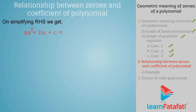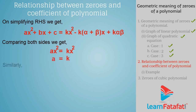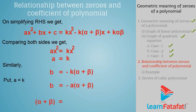On simplifying the RHS, we get ax² + bx + c = kx² - k(alpha + beta)x + k·alpha·beta. Comparing both sides, we get a = k. Similarly, b = -k(alpha + beta). Since a = k, the equation becomes b = -a(alpha + beta), that is, alpha + beta = -b/a.